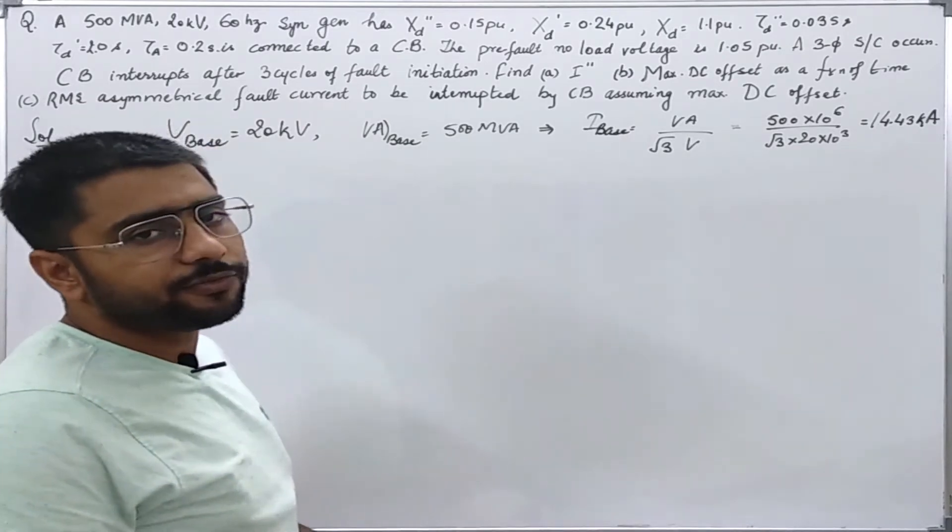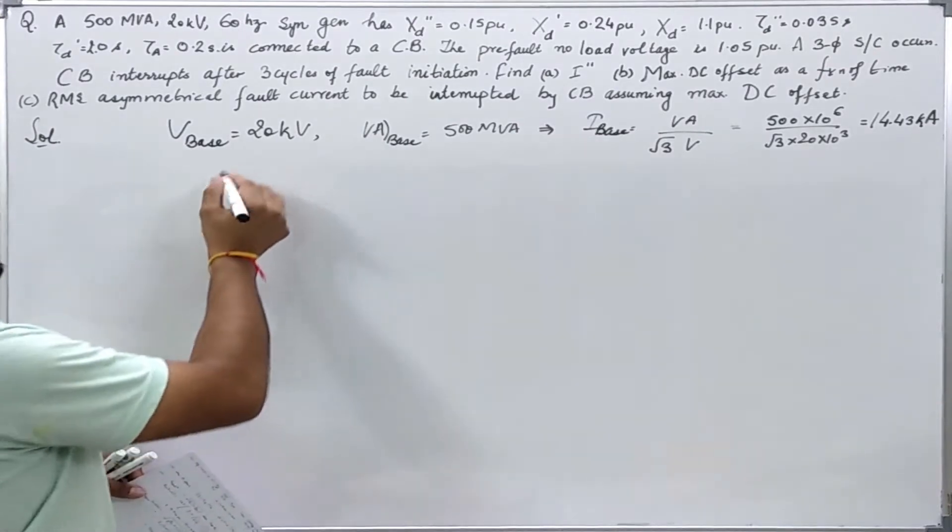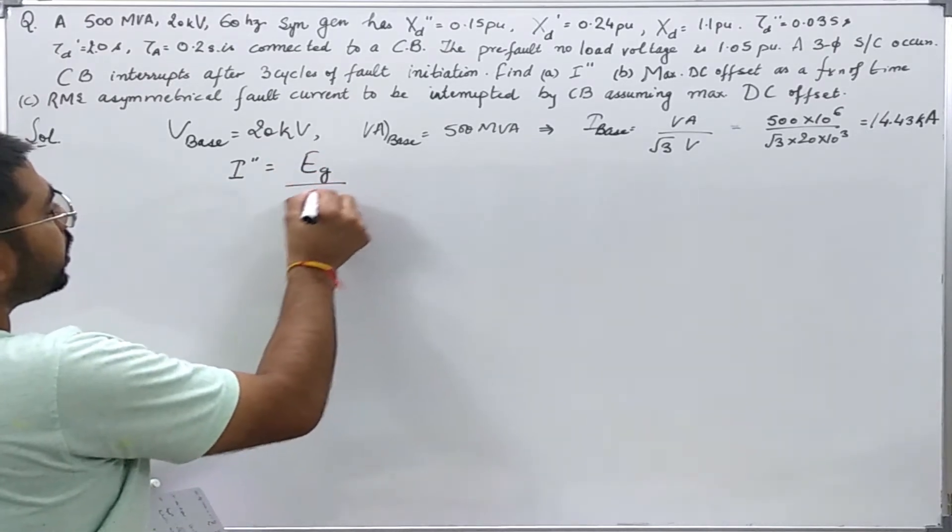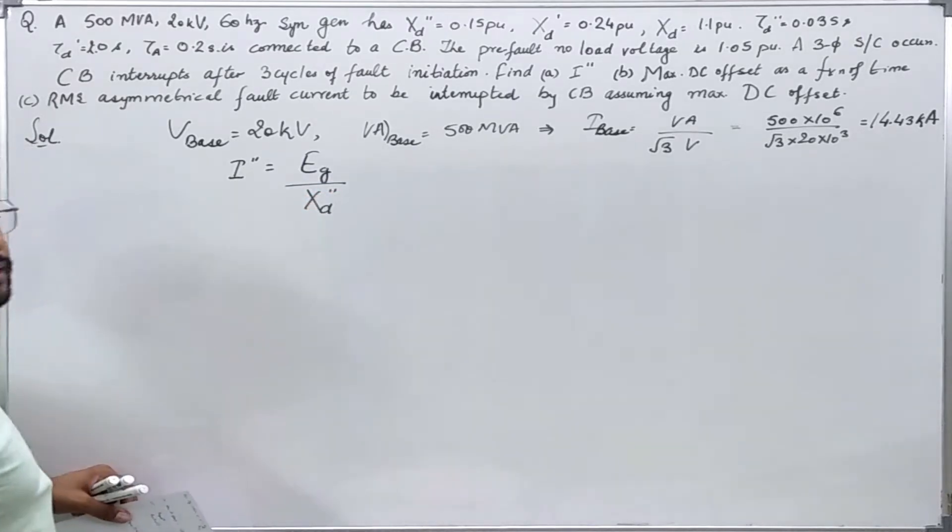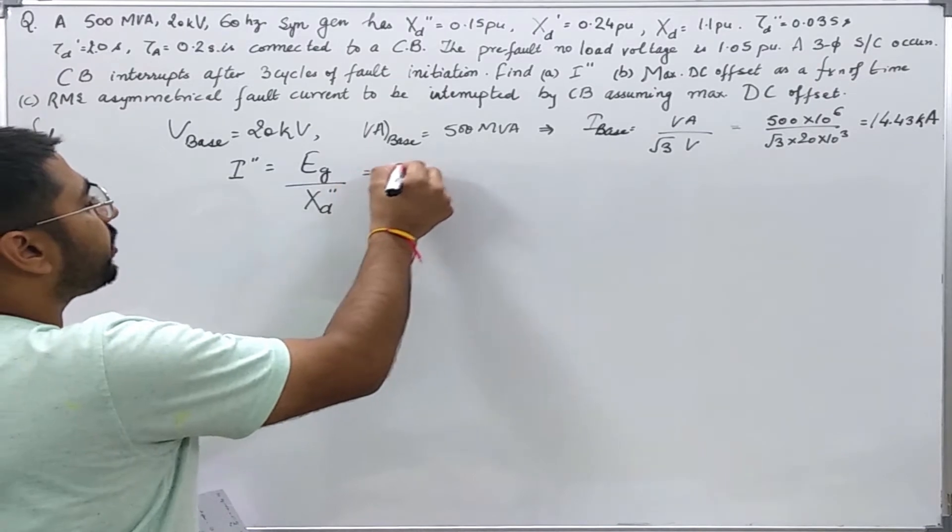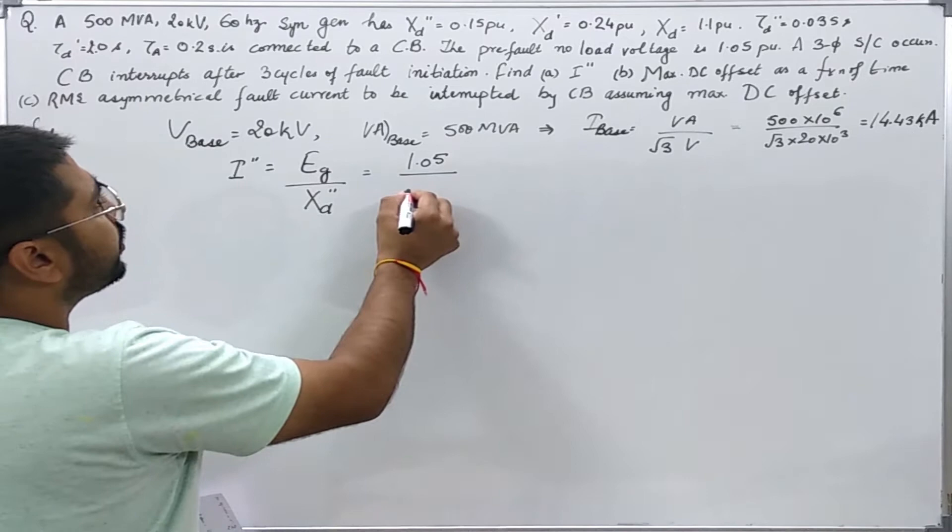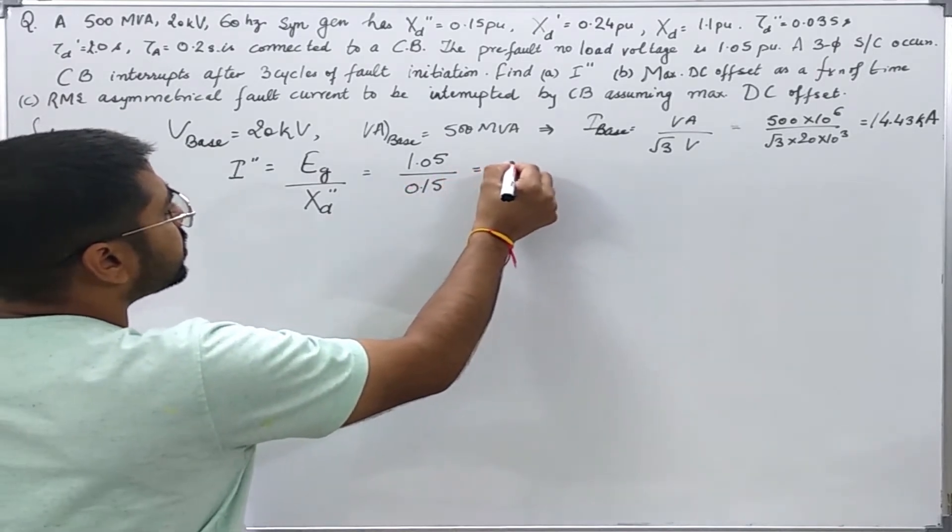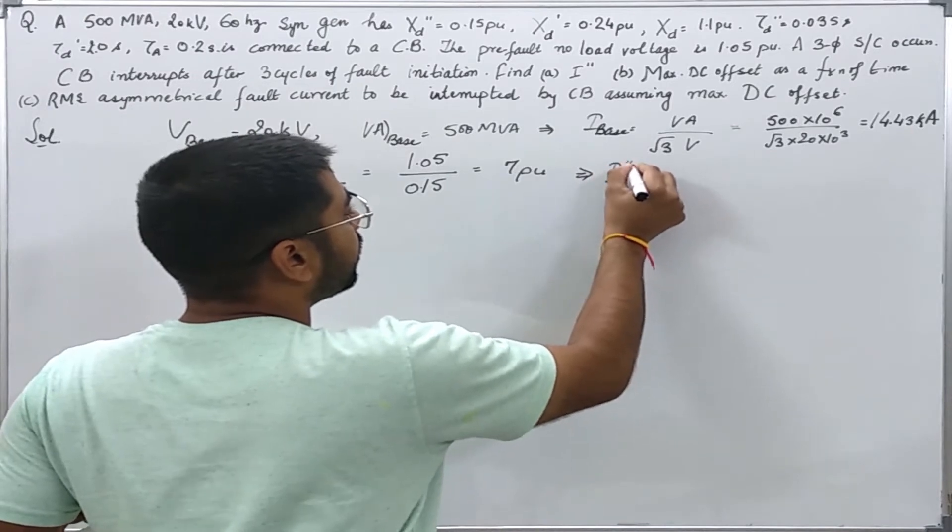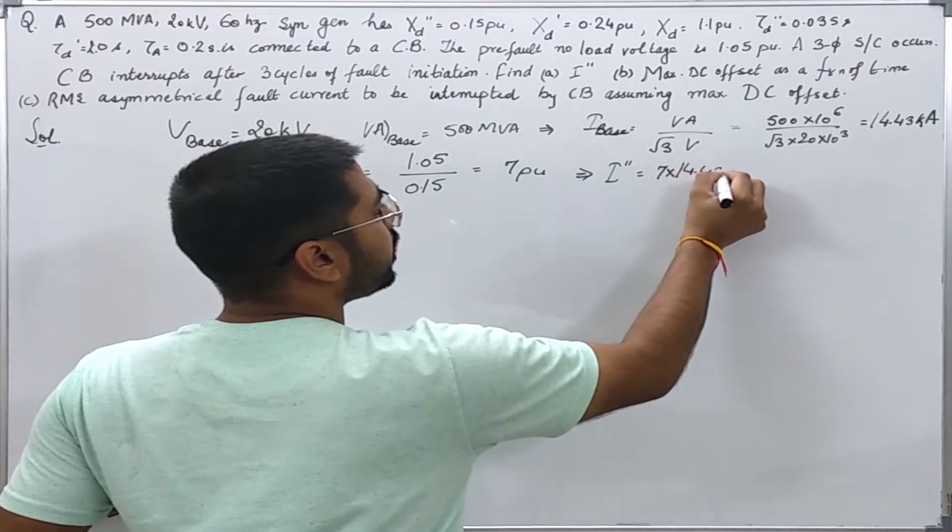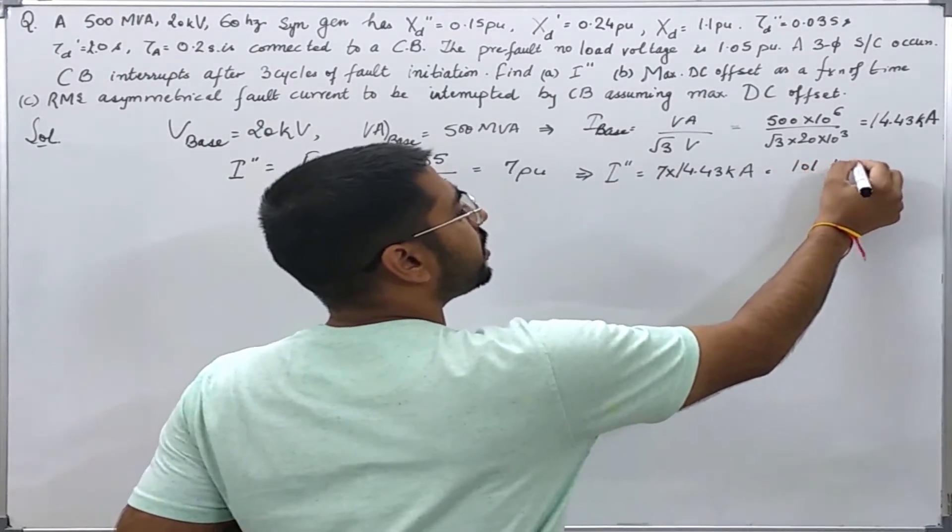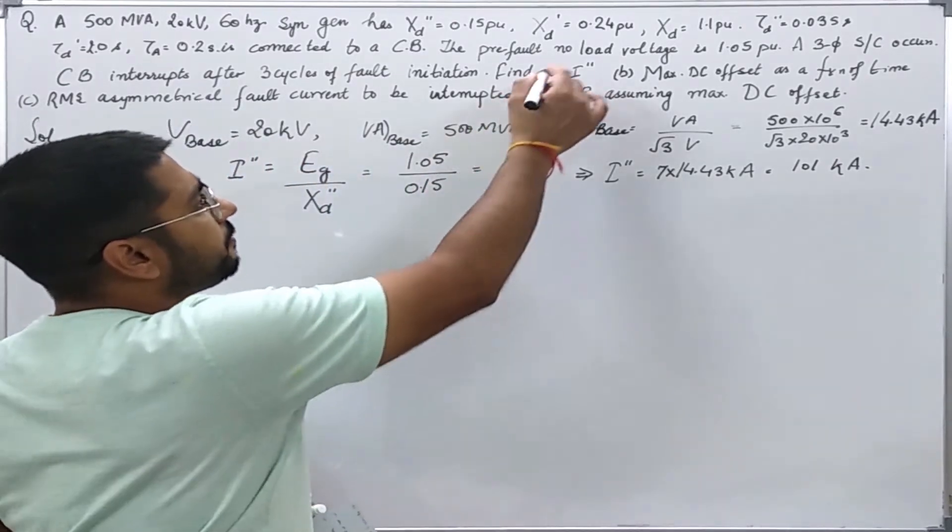I have found the base current now. I will find the sub-transient fault current. From the definition of sub-transient fault current, it is nothing but the ratio of voltage to the sub-transient reactance. We are just dealing with the magnitudes, so I have not written j here showing that it is a reactance. It will come out as 1.05 divided by 0.15 and it is equal to 7 per unit, which implies that in amps it comes out to be 7 into I base which is 14.43 kilo amps, and on multiplication it comes out to be 101 kilo ampere. This solves the first part.